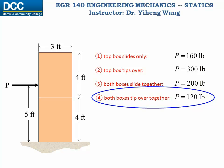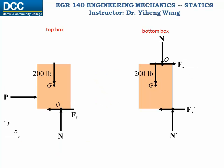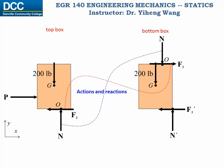You might wonder: the top box moves because force P is applied to it, but what makes the bottom box move? If we draw the free body diagrams of the two boxes separately, there are normal forces and frictional forces acting between them — simply action-reaction pairs. They are of the same magnitude, applied at the same point, and in opposite directions. It is this frictional force exerted by the top box on the bottom box that gives the bottom box a tendency to move to the right.